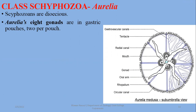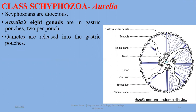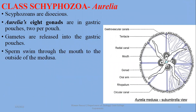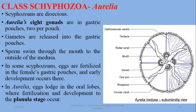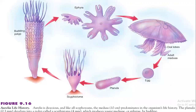Scyphozoans are dioecious. Eight gonads are present in the gastric pouches — two in each of the four pouches — totaling eight gonads. Gametes are released into the gastric pouches; sperm swim out through the mouth to outside the medusa. In some scyphozoans, eggs are fertilized in the female gastric pouches, and early development also takes place there. Eggs are lodged into the oral lobes, where fertilization and development to the planula stage occur.